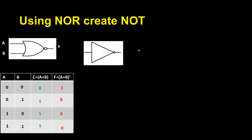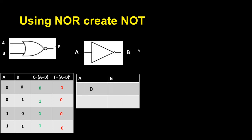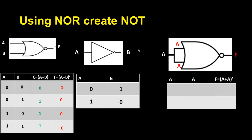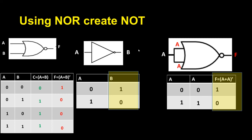This is my NOT gate. If input is 0, output is 1; if input is 1, output is 0. I connect both inputs to make it one input A, so both inputs receive A. In my table I have two A columns because there are two A inputs: 0, 0, 1, 1 — and the output will be 1, 0.